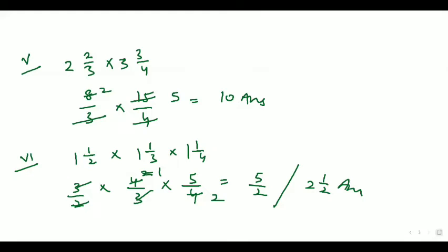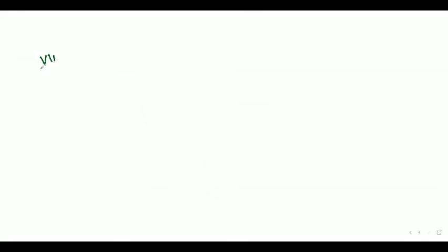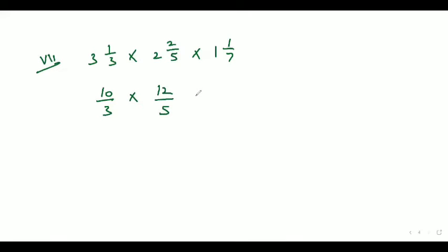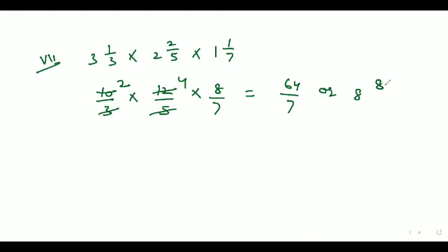Let's move to the seventh part. The seventh part is 3 whole 1/3 into 2 whole 1/3 into 2 whole 2/5 into 1 whole 1/7. It can be written as 10/3 into 12/5 into 8/7. The answer comes out as 64/7 or 8 whole number 1/7.